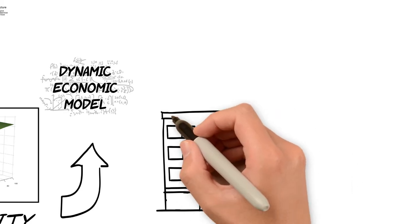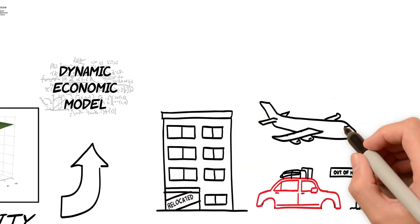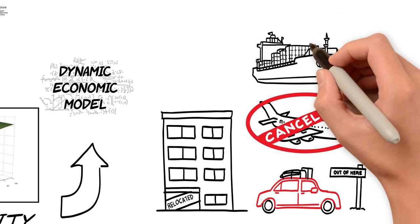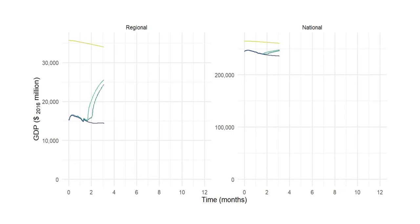MERIT can also account for other possible disruption impacts such as population relocation, business relocation, tourism demand changes and transportation system responses. MERIT combines all of these inputs and simulates how the economy responds over time.